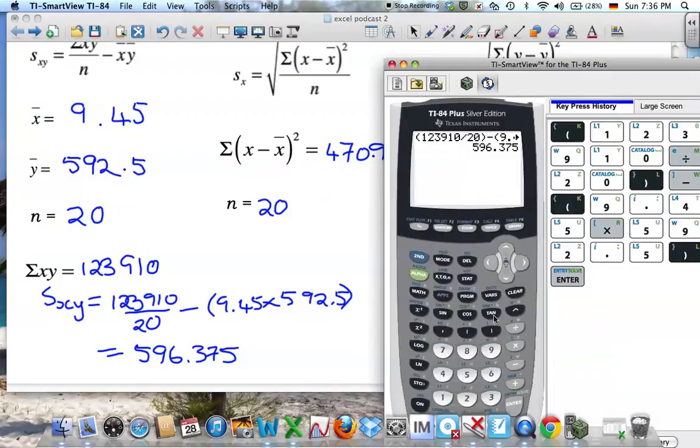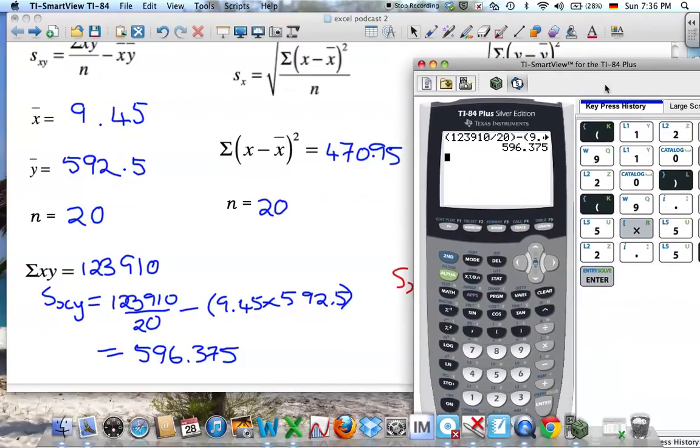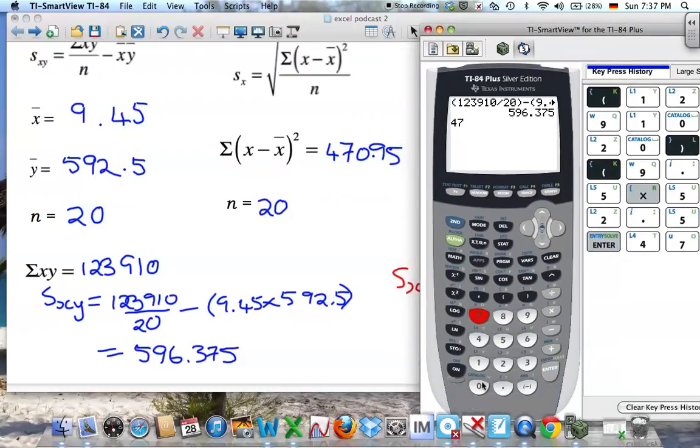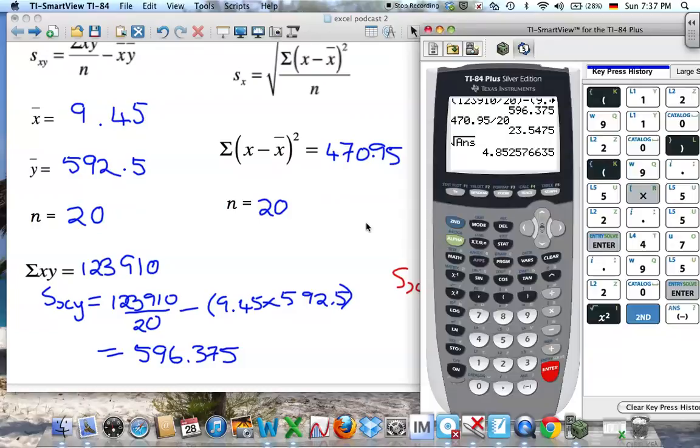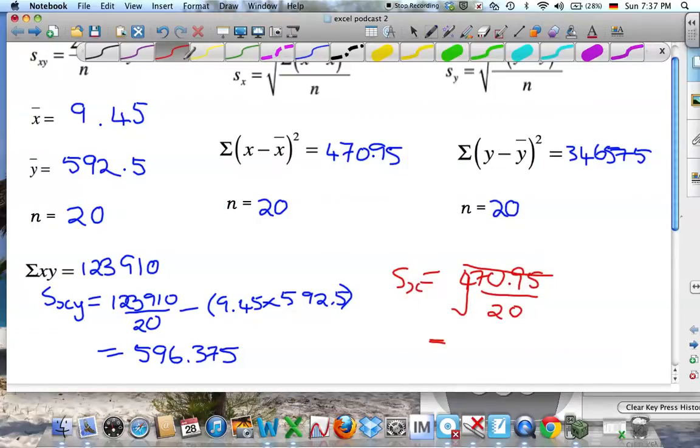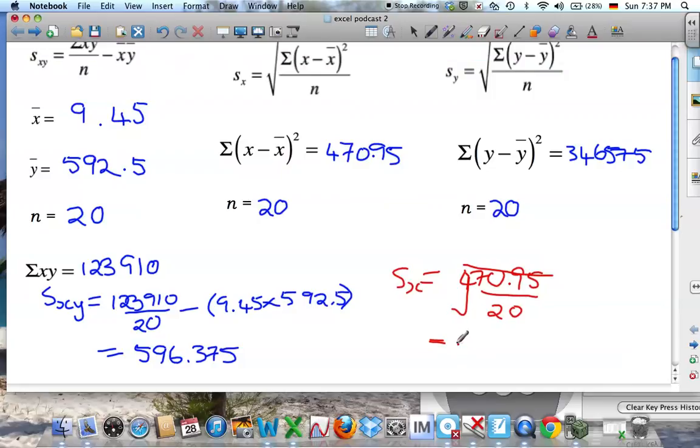If we go to our calculator again, let's move this over. So I want 470.95 divided by 20, and then take the square root of that, so 2nd square of 2nd answer. Enter. So if I do 3 significant figures I get 4.85.